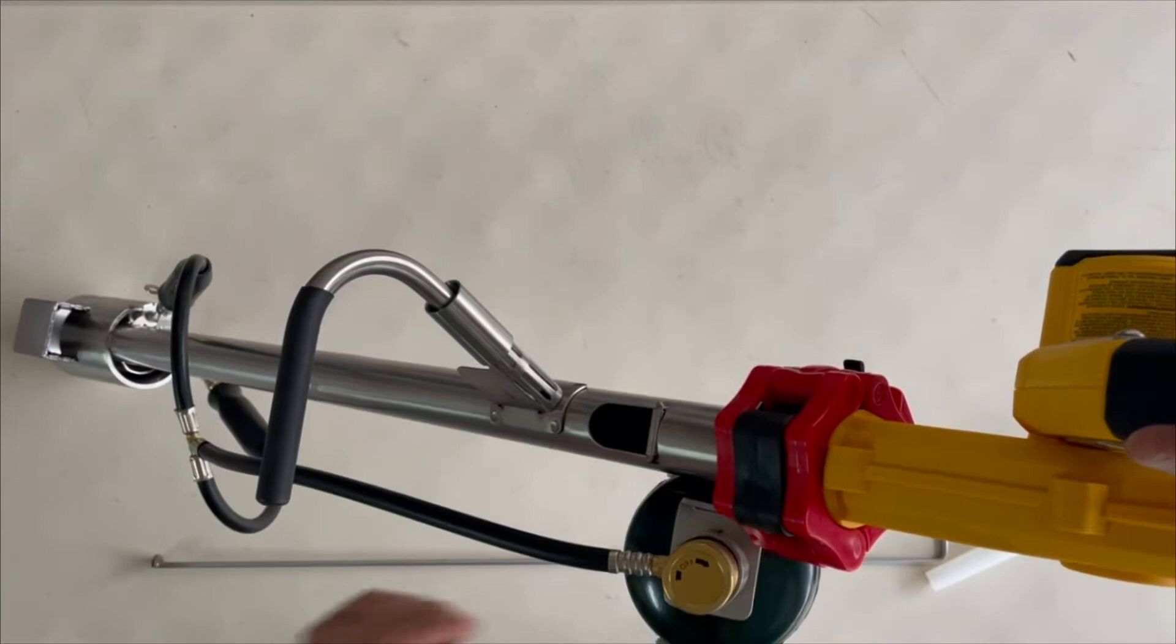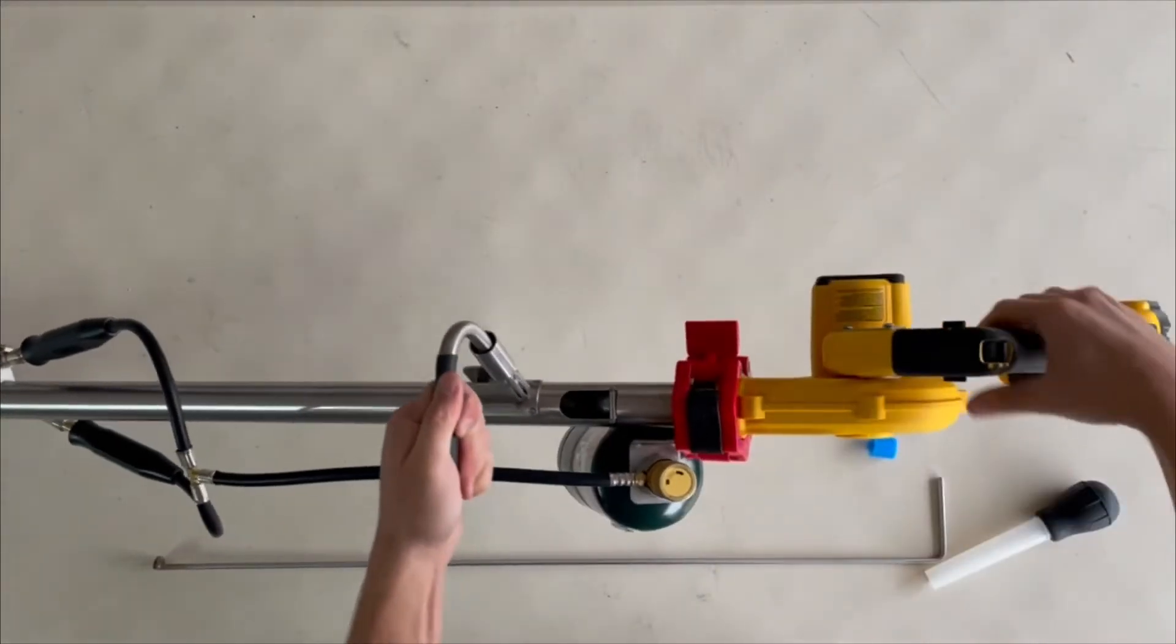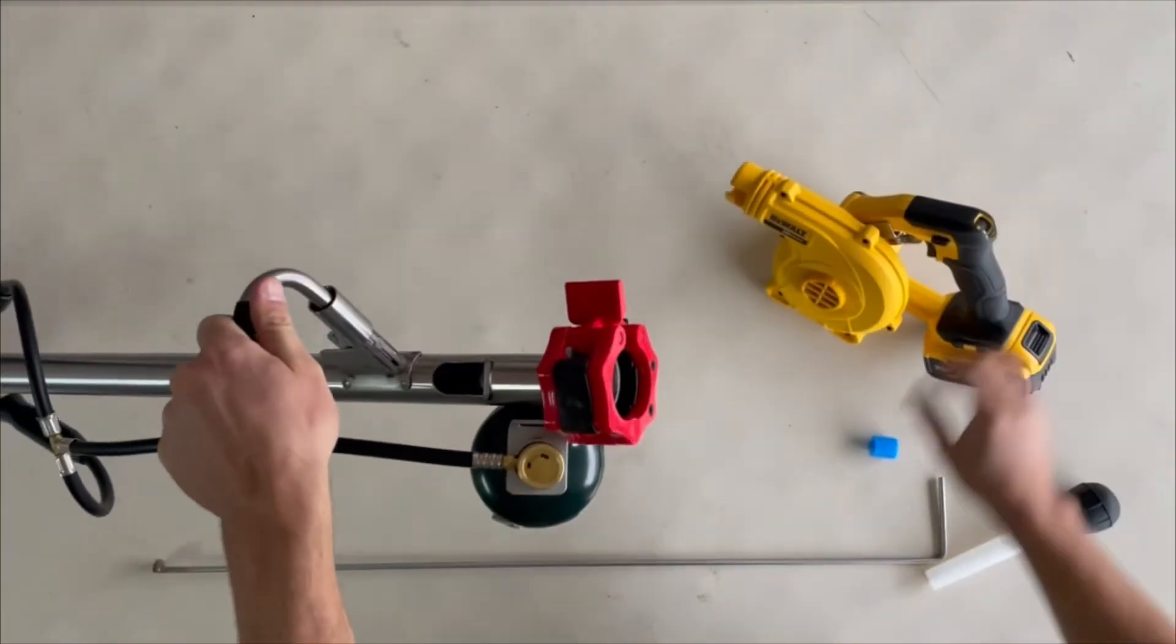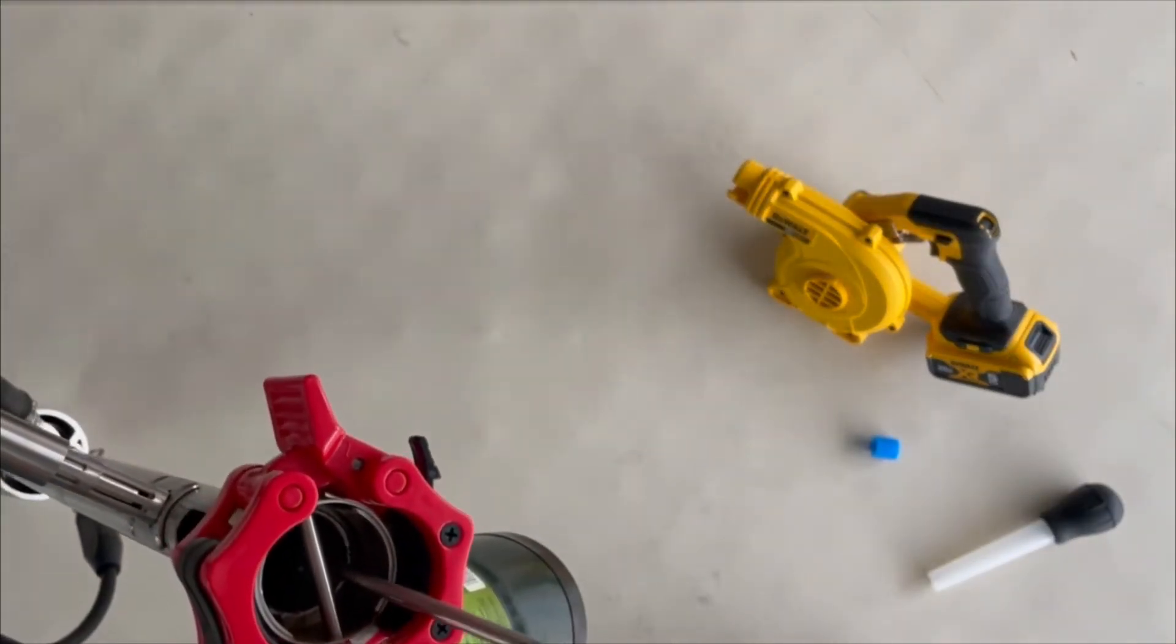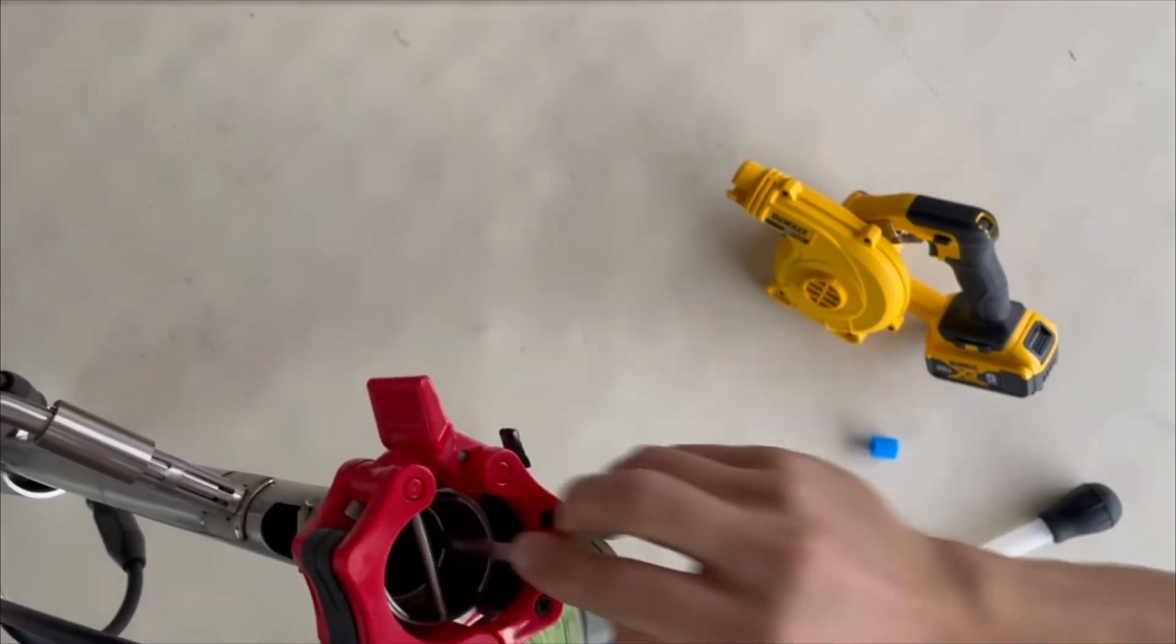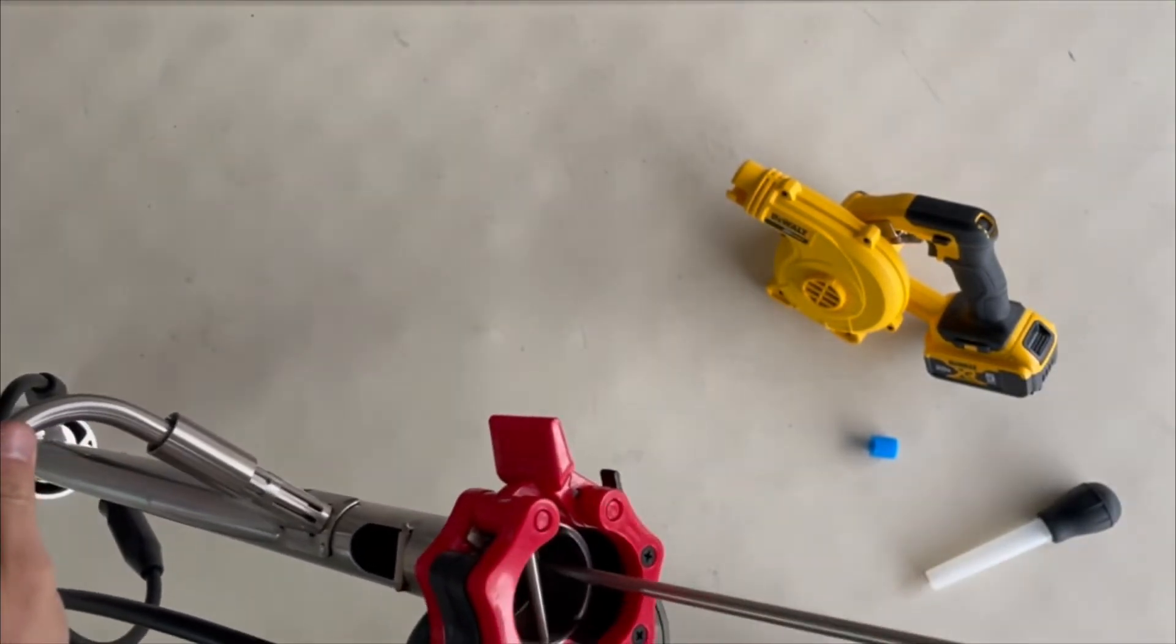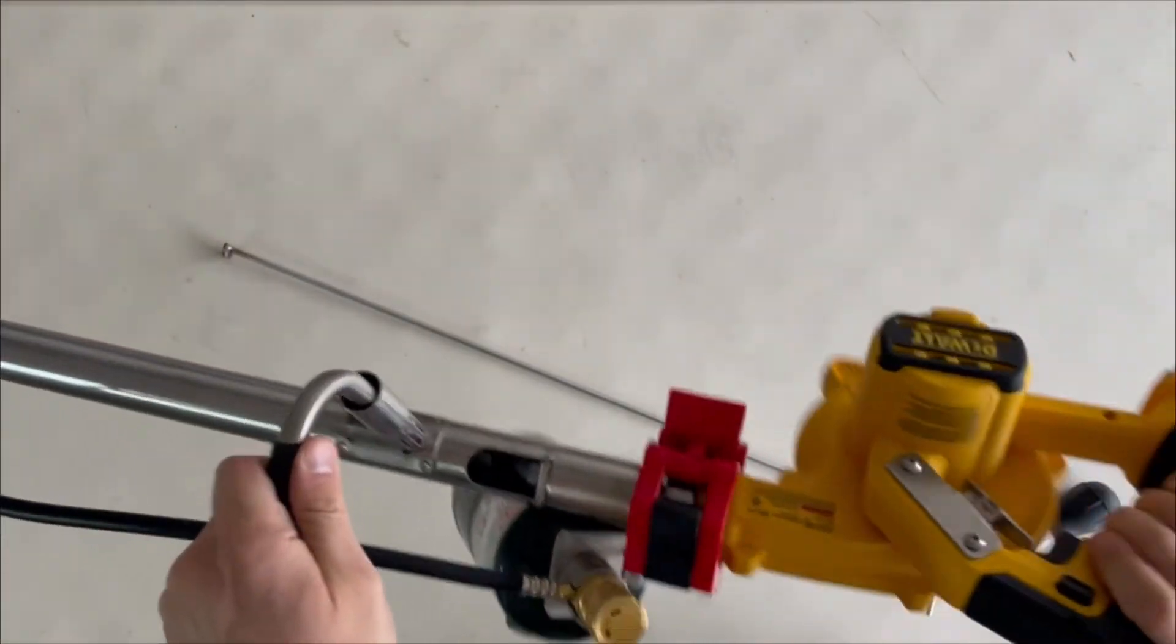To clean the vaporizer, every 15 or 20 loads is our recommended time. Every 15 to 20 loads, you'll remove the blower and put in the cleaning rod into the bottom section, push it all the way down, and go back and forth a few times. Take it out, put the blower back in, twist it, and lock it.